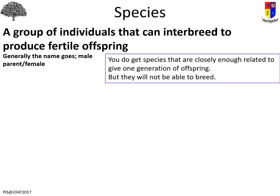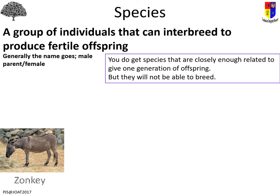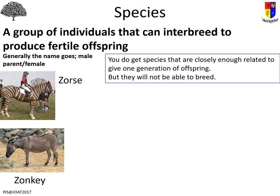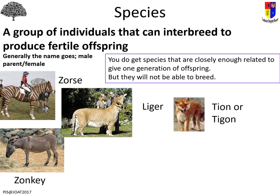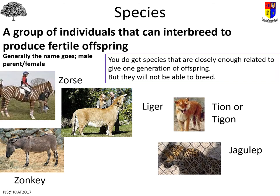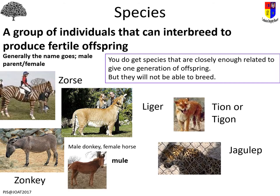So you get some unusual crosses — you may have heard of some of them. There's a zonkey, a zorse — zebra and donkey, zebra and horse. A liger and a tigon — lion and tiger, tiger and lion. There are also jaguar-leopard crosses. Probably the most useful one for humans is the mule: a male donkey and a female horse bred together produce an infertile cross, but the mule is a very good pack animal. You're not expected to know all these, but you are expected to know the definition for species.